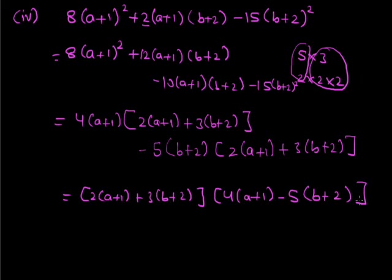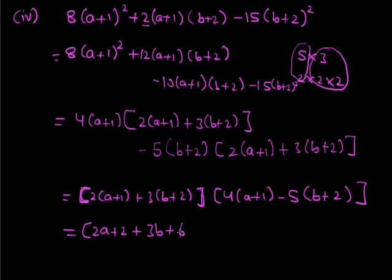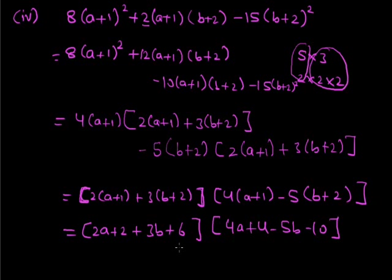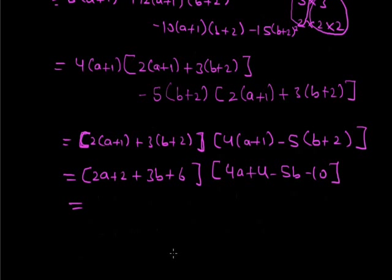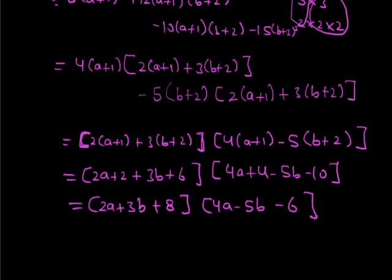We take the common factor [2(a+1) + 3(b+2)], leaving [4(a+1) - 5(b+2)]. We can further open the brackets: 2(a+1) + 3(b+2) becomes 2a + 2 + 3b + 6 = 2a + 3b + 8, and 4(a+1) - 5(b+2) becomes 4a + 4 - 5b - 10 = 4a - 5b - 6. So the final factorization is (2a + 3b + 8)(4a - 5b - 6). This completes the factorization by splitting the middle term.